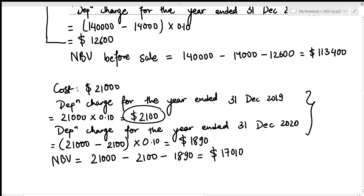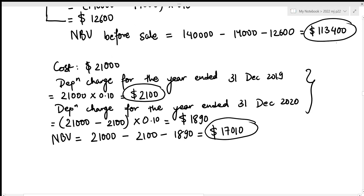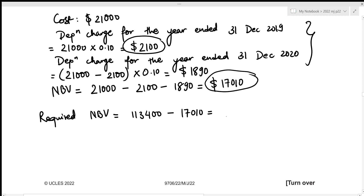To find the net book value on which we charge depreciation for the year ended 31st December 2021, we subtract the net book value of the disposed furniture from the total net book value before sale: 113,400 − 17,010 = $96,390.